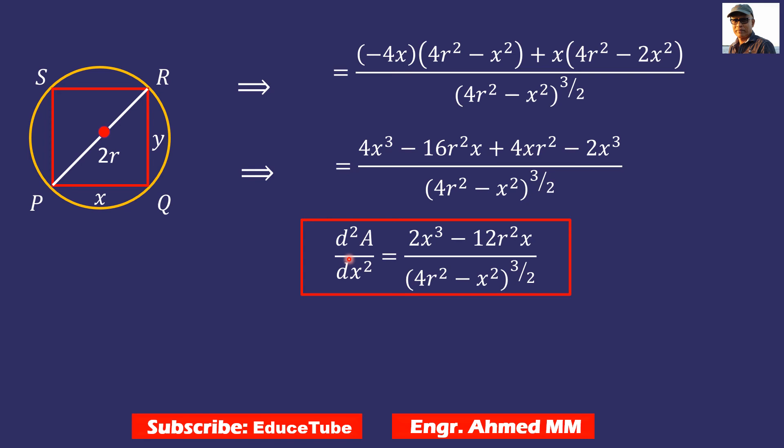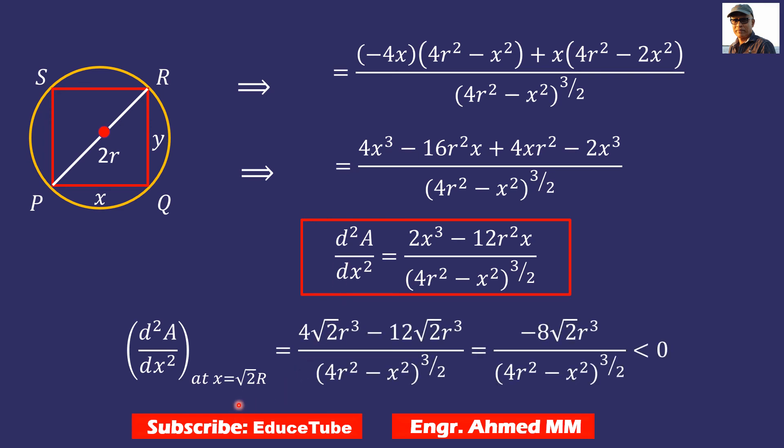Now we need to see, we had x = √2r from first derivative equal to 0. Now putting this value in the result of second derivative, we want to see is it giving negative value or not. You can look here, it is negative, so less than 0. So we are happy now. Both conditions satisfied: first derivative equal to 0, second derivative less than 0.